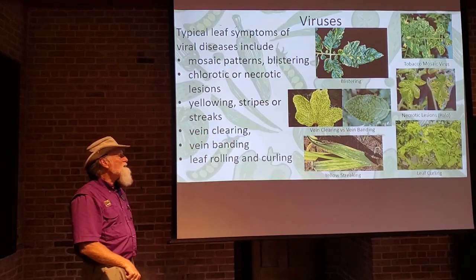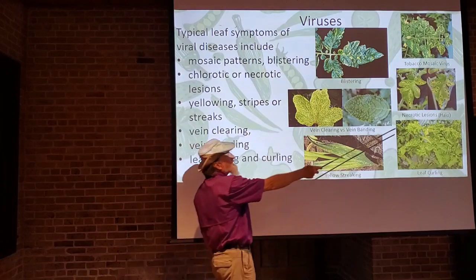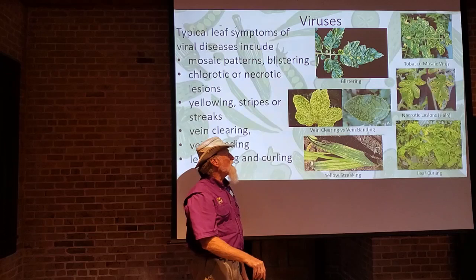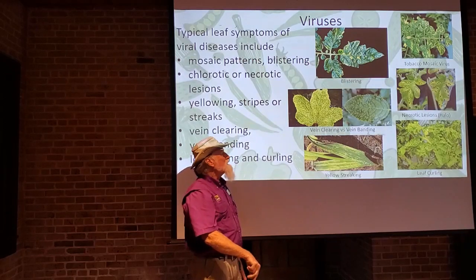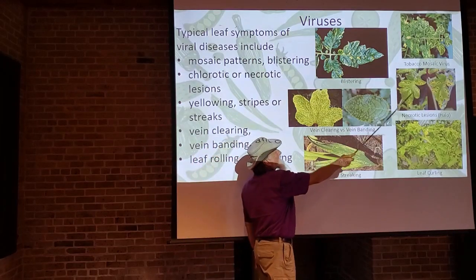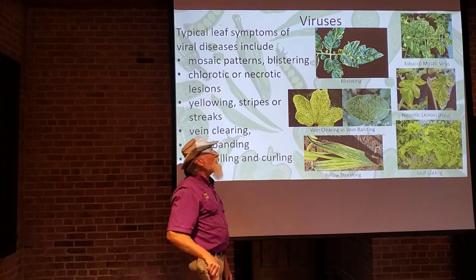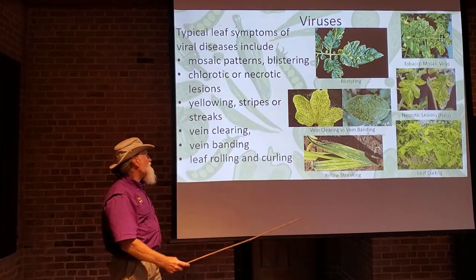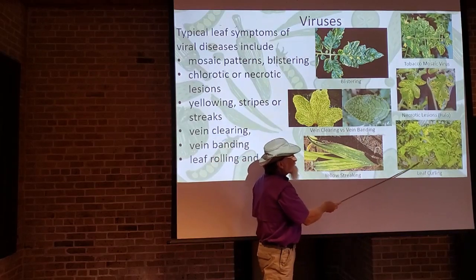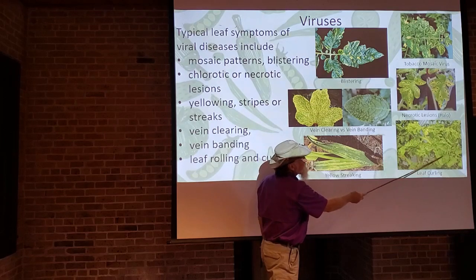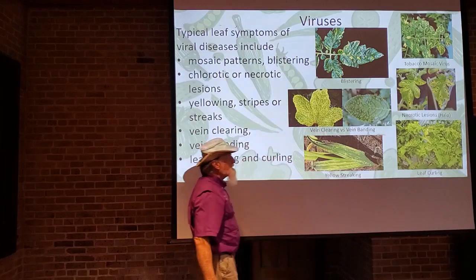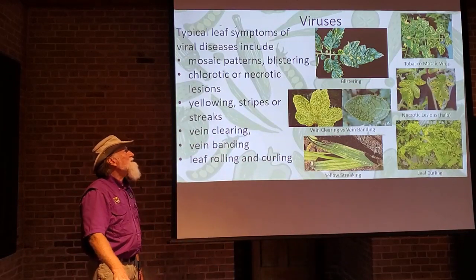You can also have necrotic lesions, which would be very similar to necrotic lesions caused by bacteria and fungi — once again, it's important to know what is causing the disease. Often, the necrotic lesions will be encircled by a yellow halo. Another symptom is leaf rolling or leaf curling — with tomato leaf curl virus, you can see the leaves cupping up, with the edges rolling and curling.